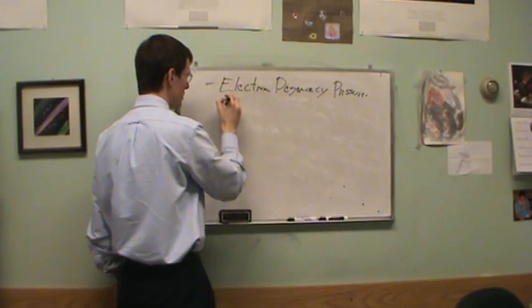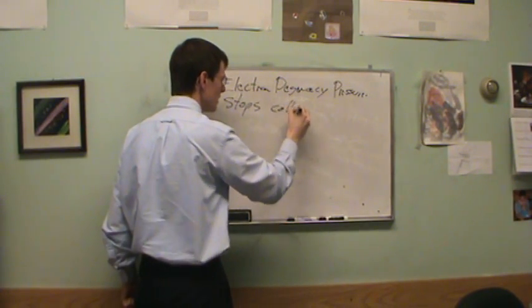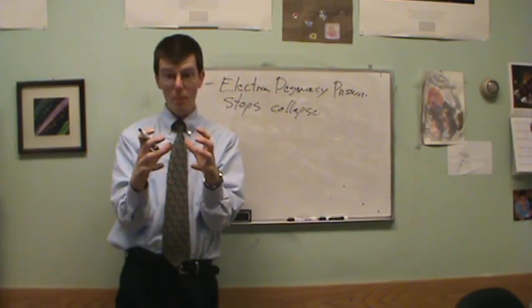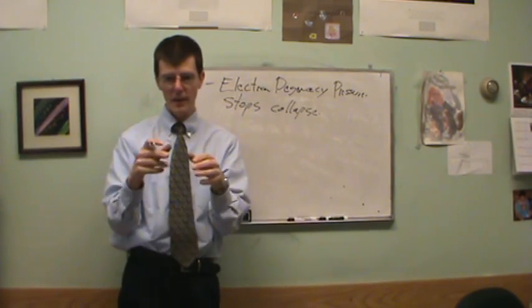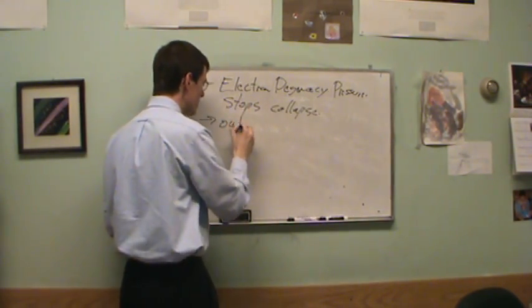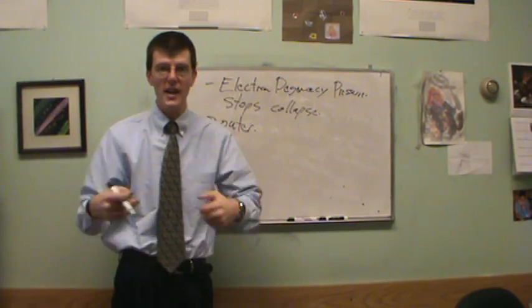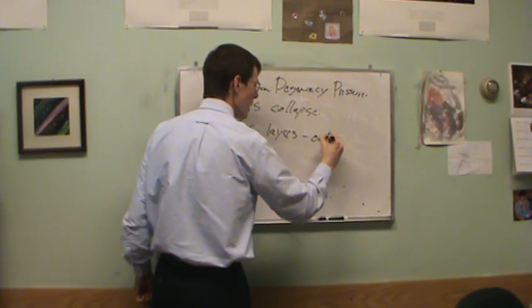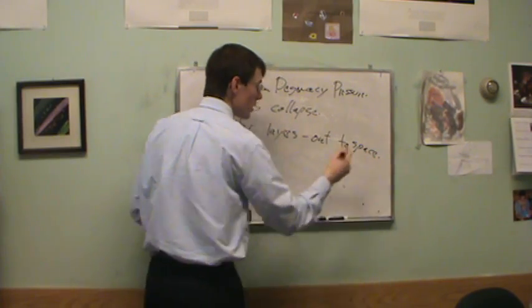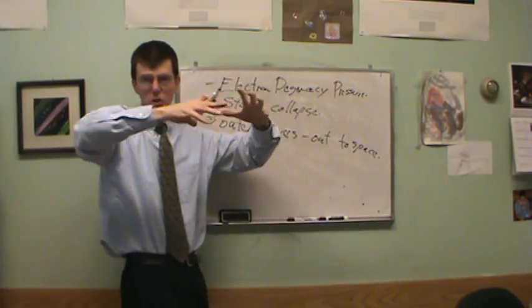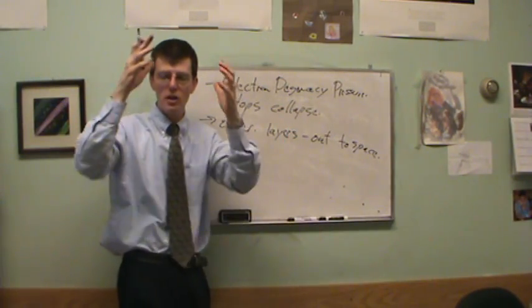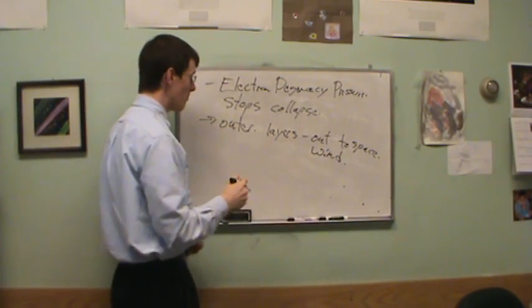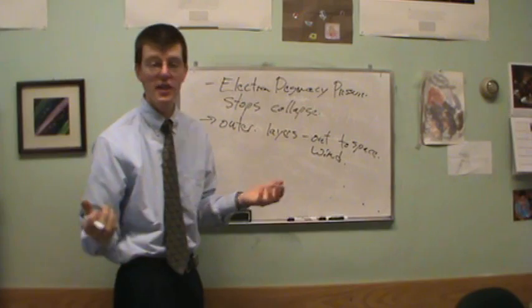So what happens, electron degeneracy stops the collapse and it balances out the core. And so now you have this core of carbon, surrounded by some helium and surrounded by some hydrogen. And so what happens now is the outer layers of the star, but it can't do any more nuclear fusion. Fusion is done. It's not going to do any more energy generation. So the outer layers are blown out into space, during the kind of the end of the red giant phase, the sun swells up so enormously huge, it's engulfed the earth. And so these outer layers are pushed back out into space by a strong wind.